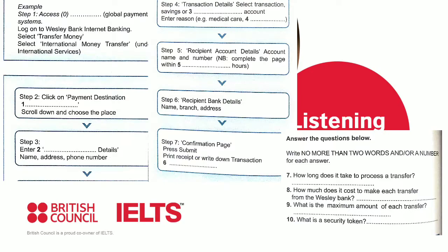My mother needs to pay for an urgent medical procedure and I have to pay for my sister's school fees as well. Will that do? Yes, both are valid reasons. Thanks. What now? The next step is to fill in the recipient account details. You need to enter the account name and number of the person who will receive the money. Oh, I see, of course.